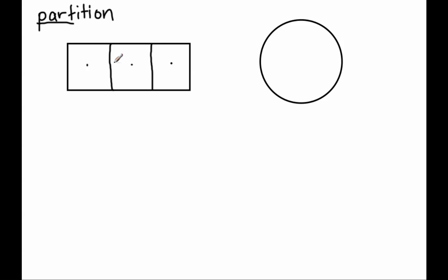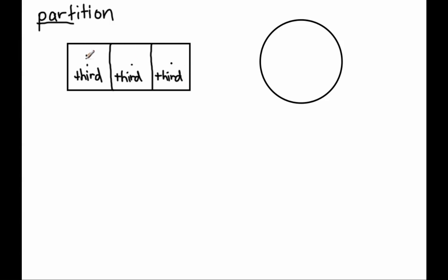We have a very special name for something that has three equal shares. If they are equal, we then call each share a certain unit, a certain name — we call these units thirds. So this is a third, this is a third, and this share right here is a third, because they are all equal shares. This is one third, this is one third, and this is one third.